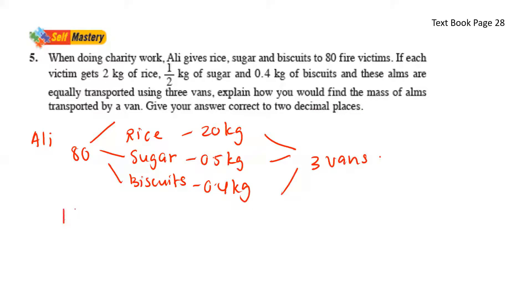2 kg plus 1 over 2 kg, plus 0.4 kg. That gives us 2.9 kg. For 80 families, we have 2.9 kg times 80, and that will give us 232 kg of food.